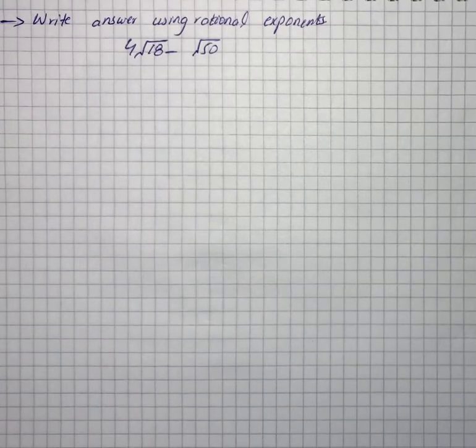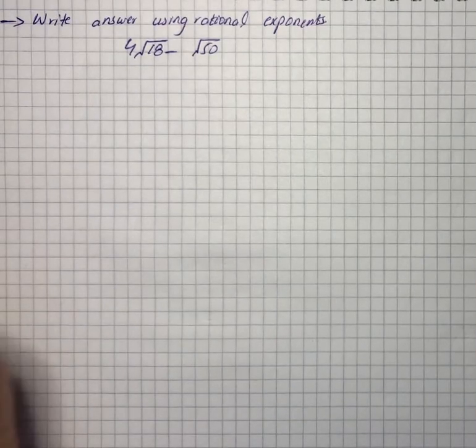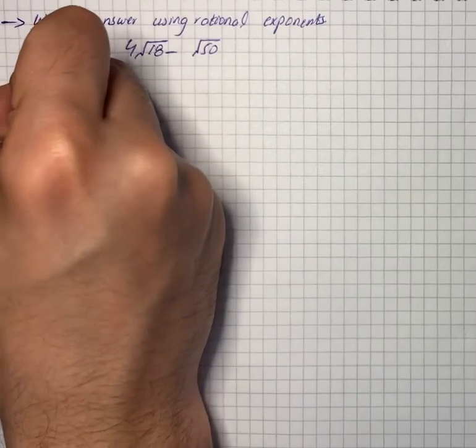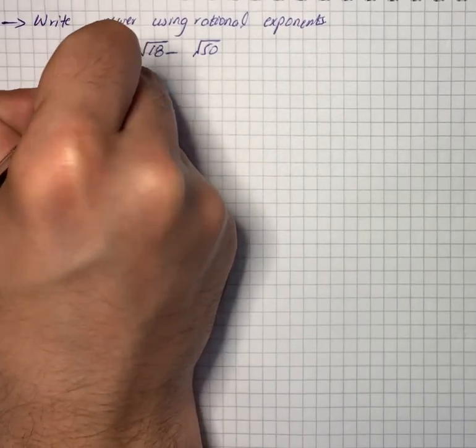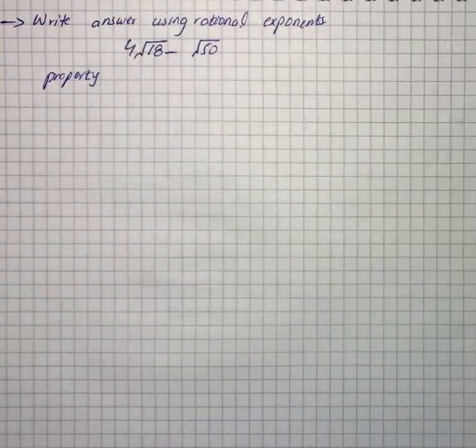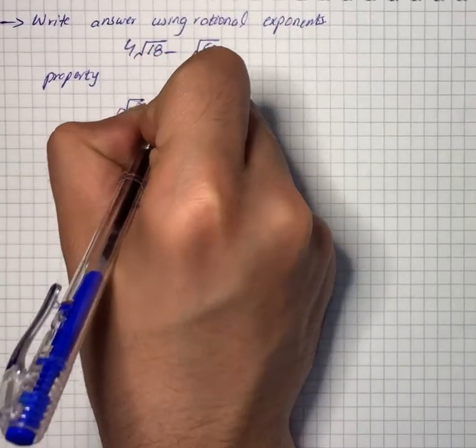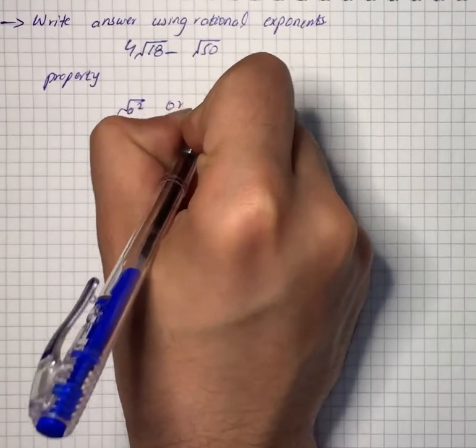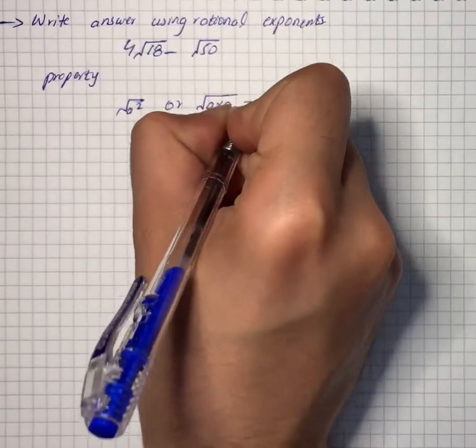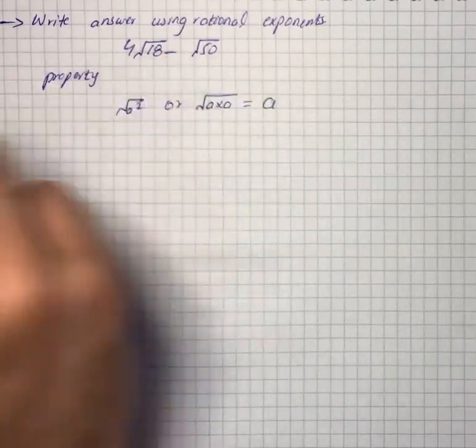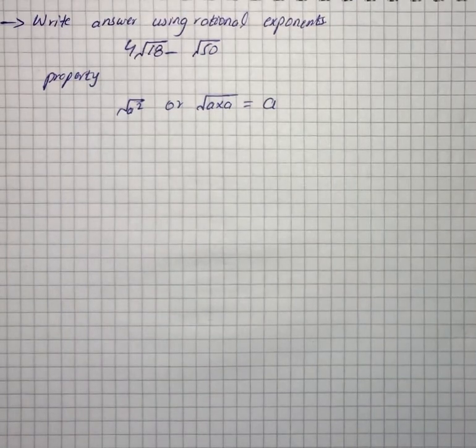The question says write answer using rational exponents. So first of all, the property we're going to use will be: √a² or √a = a. Right, now we will start putting the values.